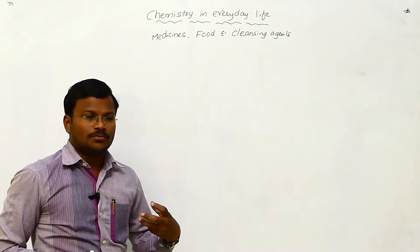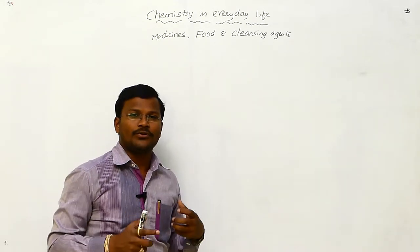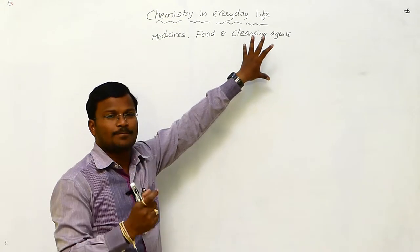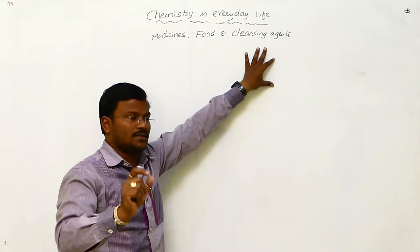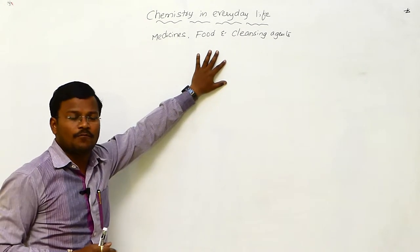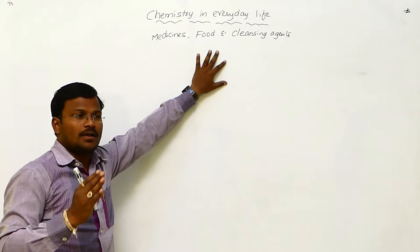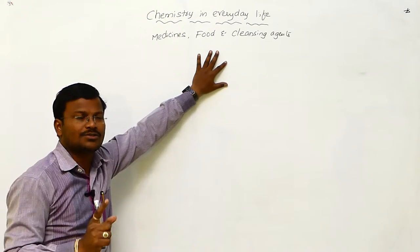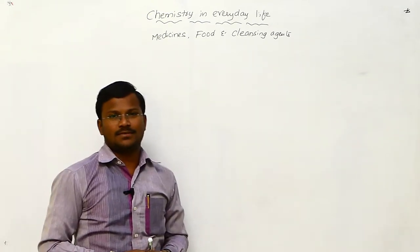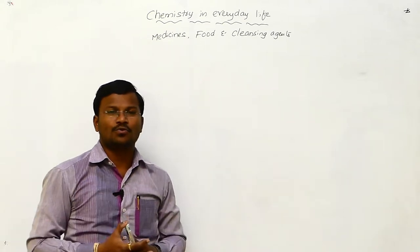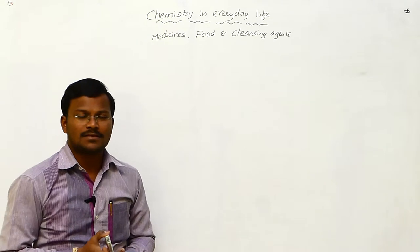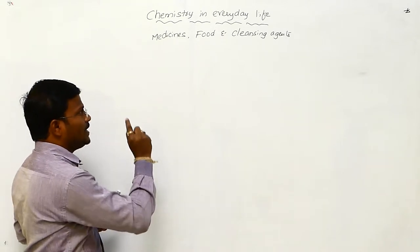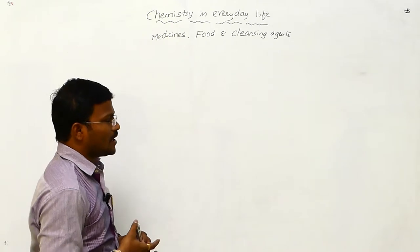Whenever we wash our clothes we use cleansing agents — they are also chemicals. To wash or clean our body we use various types of soaps, which are nothing but chemical substances. Food and food preservatives — food is naturally produced through photosynthesis of plants, resulting in glucose, sucrose, starch, etc. And medicines — for every disorder to human beings or animal bodies, we use chemical substances, which are called medicines.